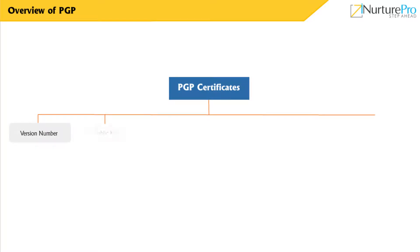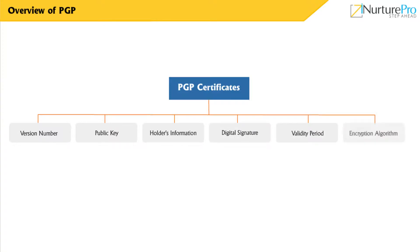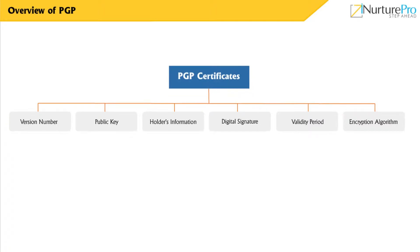Version number, public key, holder's information, digital signature, validity period, and encryption algorithm. Let's discuss each of these contents in detail.